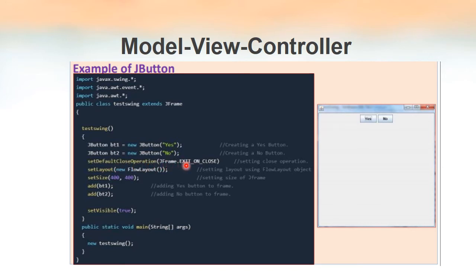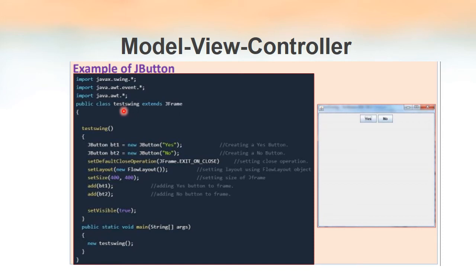We have JButton bt1 and JButton bt2, with their text labels set as 'Yes' and 'No'. Then we set the default close operation so that when we click on the close icon the frame will be closed. We have set the layout as FlowLayout using the setLayout method with new FlowLayout() as the parameter. The class itself is the container here because it's a JFrame — a frame is a container capable of holding other components. Since TestSwing extends JFrame, it is also a container, and since we are using FlowLayout, the buttons will be arranged according to that layout manager.